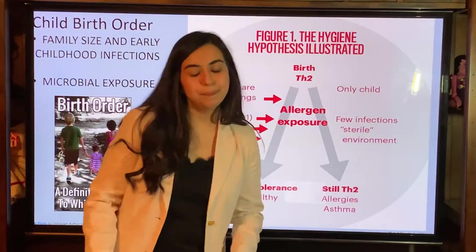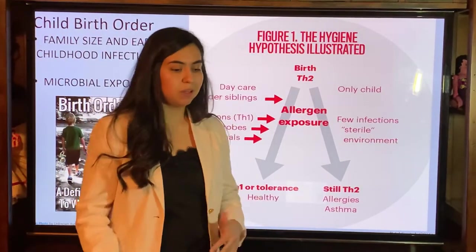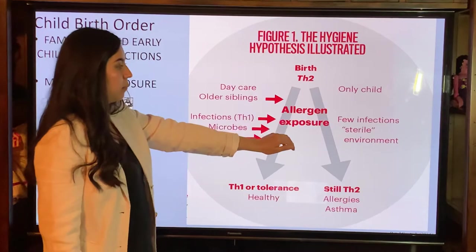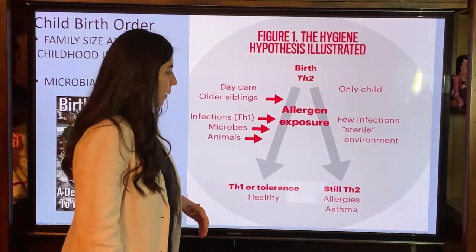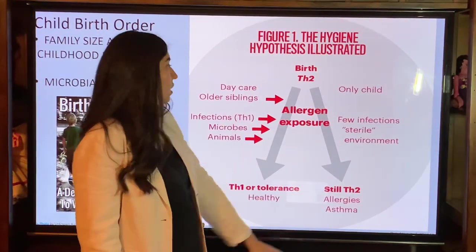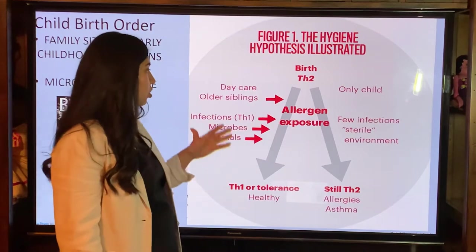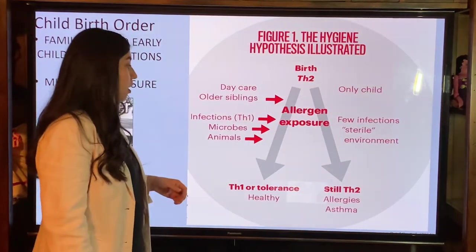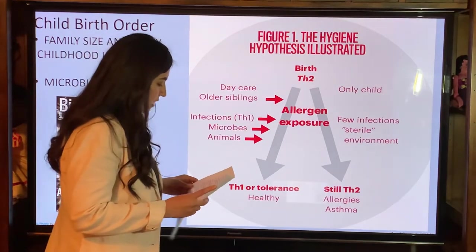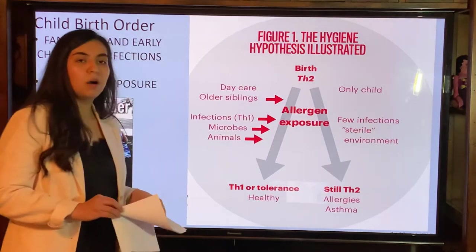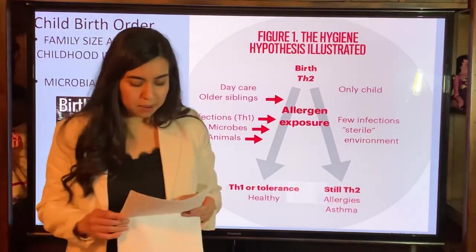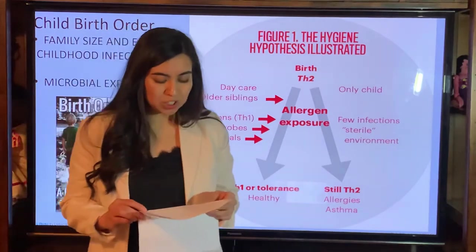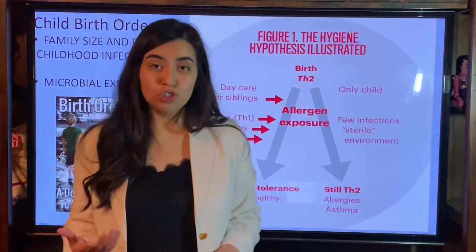Another study reviewed how child birth order affects the Hygiene Hypothesis. Only children have few infections and live in a more sterile environment, which causes an increase in allergies and asthma. In contrast, daycare children or children who have older siblings have more infections, more T helper 1 responses, and are exposed to more microbes and animals. There has also been evidence that children who grew up on farms develop fewer allergies, as farms increase exposure to different types of good and bad germs which stimulate the immune system and reduce the risk of developing allergies.